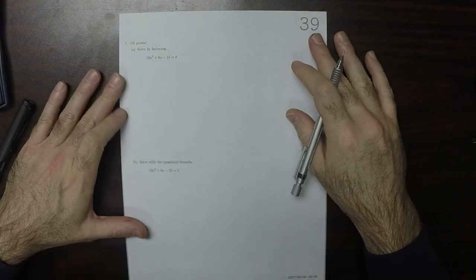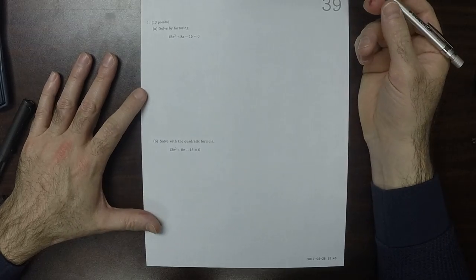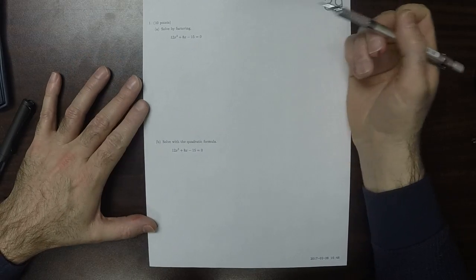This is the solution to written homework 39. So we're given the same quadratic equation twice and told to solve it using two different methods.